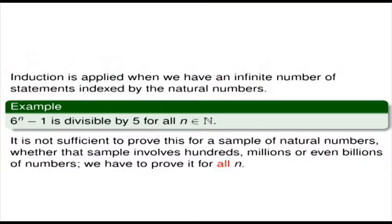So if we took n equals 1,000, then 6 to the power 1,000 minus 1 is divisible by 5. Now, this might appear a bit surprising. It's not sufficient to prove this for a sample of natural numbers, whether that sample involves hundreds, millions, or even billions of numbers. We have to prove it for all n. Taking a very high number, such as 1,000, won't do it.